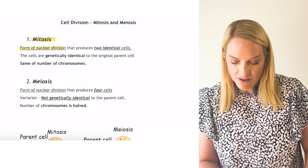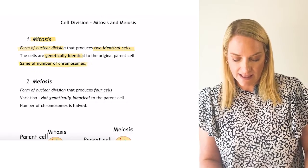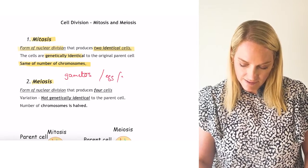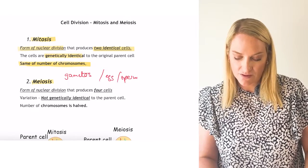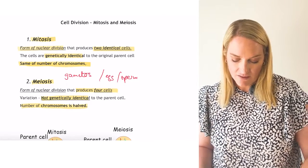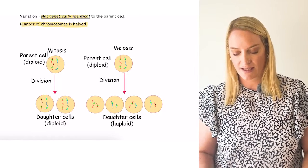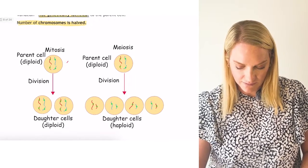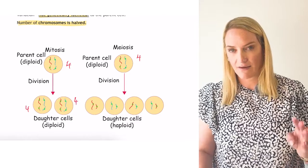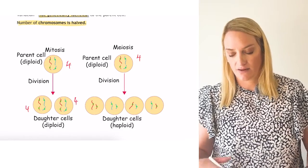Mitosis is a form of nuclear division that produces two genetically identical daughter cells with the exact same number of chromosomes as the parent. Meiosis produces gametes — eggs and sperm. Meiosis is a form of division that produces four daughter cells that are not genetically identical, bringing about variation, and the number of chromosomes is halved. For example, if the parent cell has four chromosomes, meiosis produces four daughter cells each with two chromosomes.